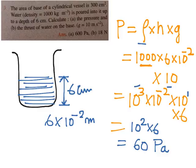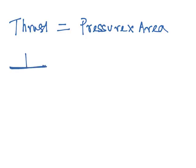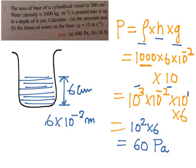The second part of the question asks for the thrust of water on the base. Thrust is pressure into area. Thrust is the normal force — if this is the base, this is the amount of force at 90 degrees, not at any angle. The pressure we calculated is 600 Pascal.